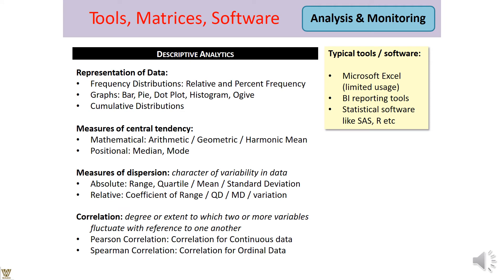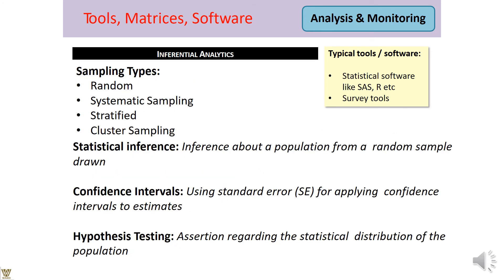The software for analysis includes Excel as the most common tool, as well as ERP reporting systems. For descriptive analysis, we use frequency distributions, bar charts, cumulative distributions, measures of central tendency (arithmetic mean, geometric mean, harmonic mean, median, mode), and measures of dispersion (range, quartiles). For correlation, we use Pearson correlation for continuous data and Spearman correlation for ordinal data where continuous data is missing.